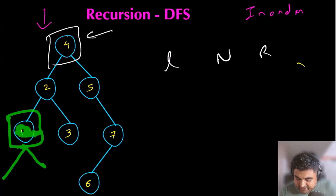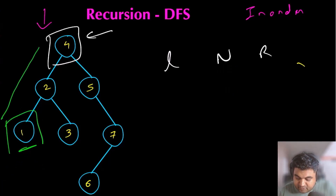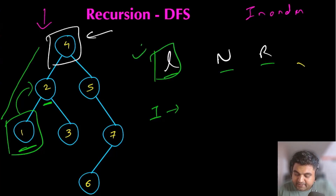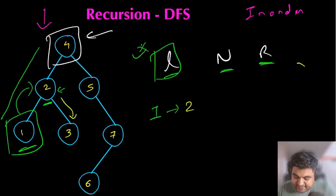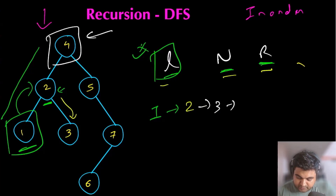We treat node number one as processed. This is how recursion ends for this portion — the first node we visit is node number one. Now we backtrack, and for node two, the left has already been taken care of, so we mark node two as visited. Node two still has a right child. If that right child had additional children, we would apply the left, node, right logic again, but since it does not have any additional children, this is a terminating case. The next node we visit is node three.